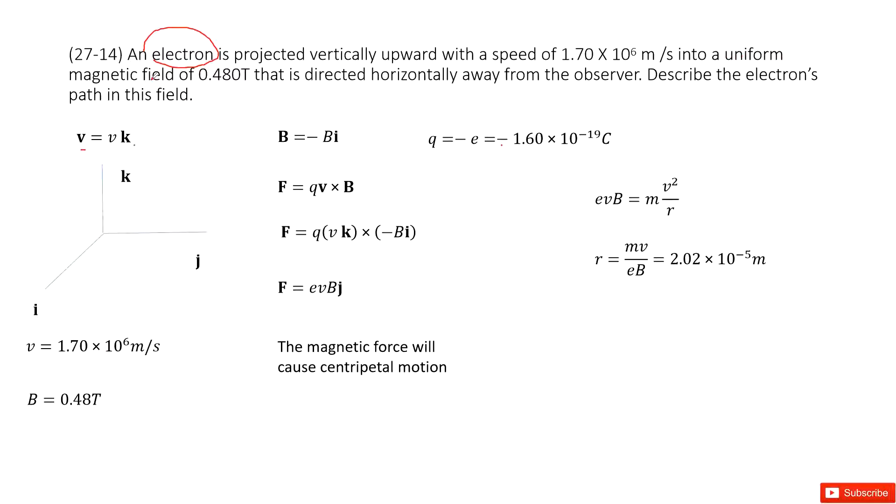And then in a uniform magnetic field B. And this B is directed horizontally away from the observer. It's into the page, so keyword into the page. That means B is in the negative i direction, because into the page.